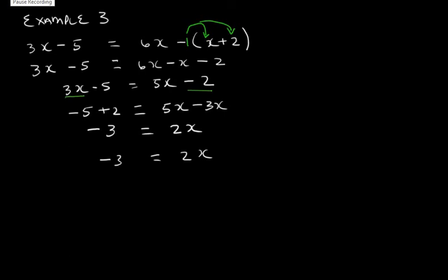That leaves us with -5 + 2 which is -3, and then 5x - 3x = 2x. However, we need to solve for x so we need to divide by 2 on both sides. That leaves us with x = -3/2 or negative 1 and a half.